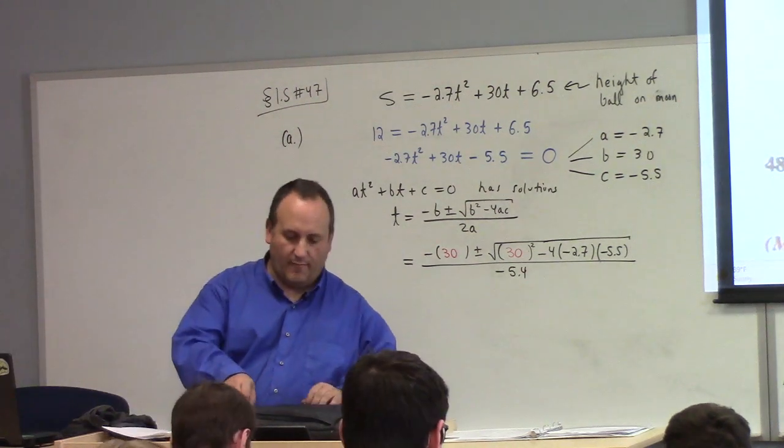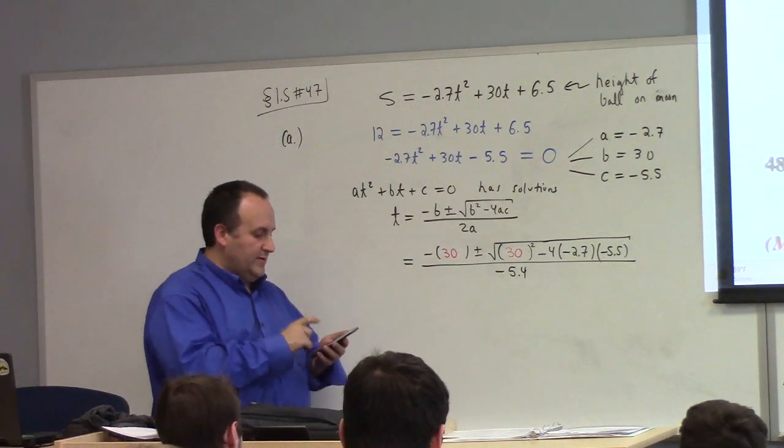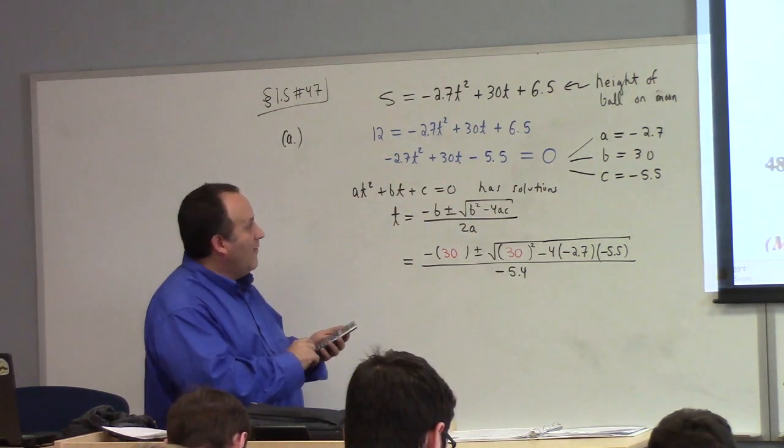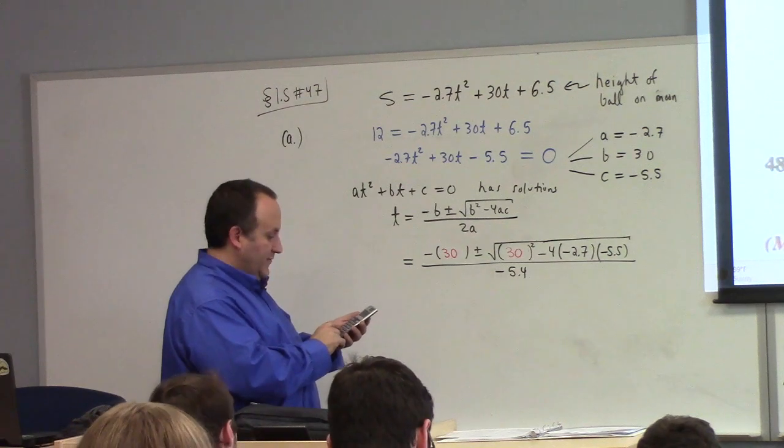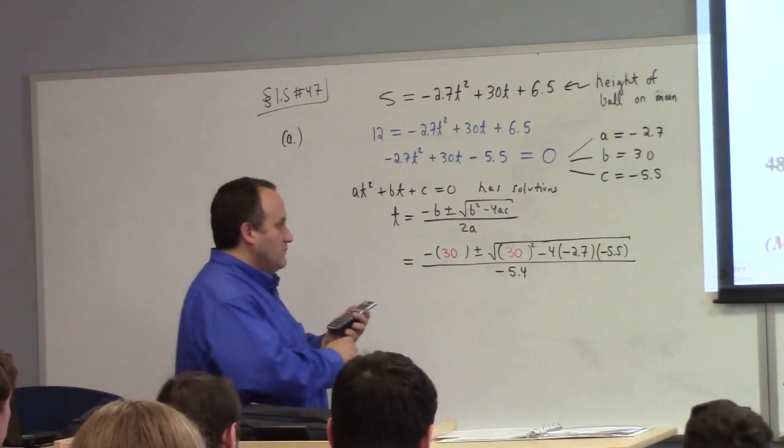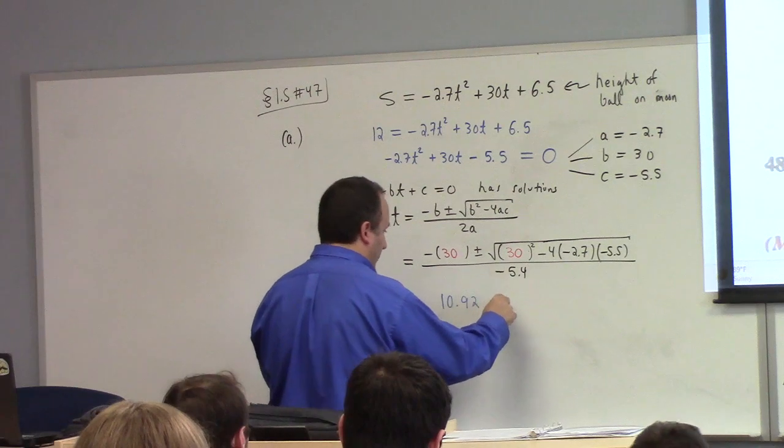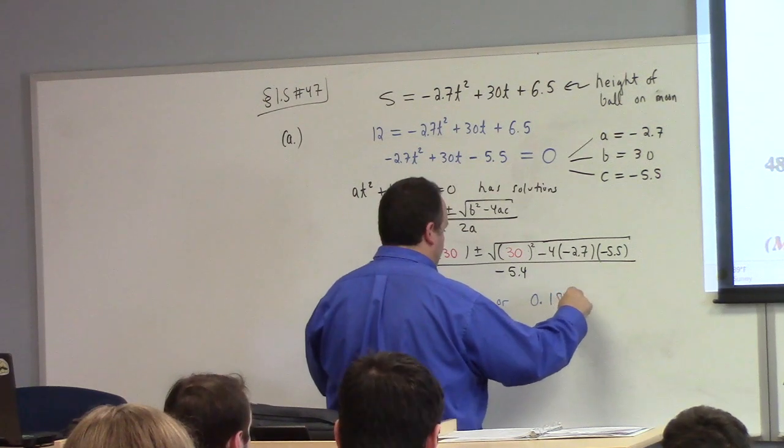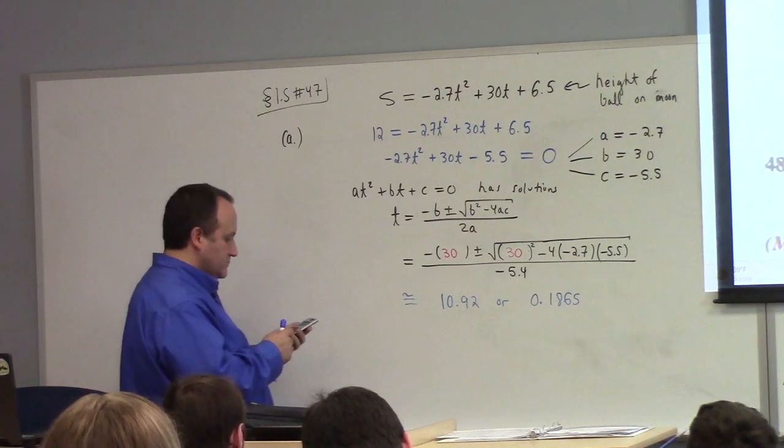So, I encourage you guys to get this calculator. If I go mode and then 5 equation and then 3 quadratic, all I have to do is put minus 2.7 for A, 30 for B, and minus 5.5 for my C, and it tells me the answers. In particular, 10.92-ish or 0.1865-ish.